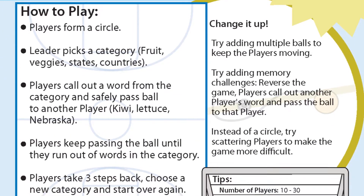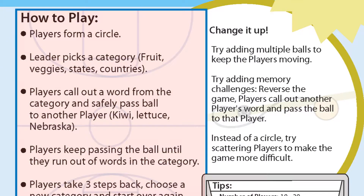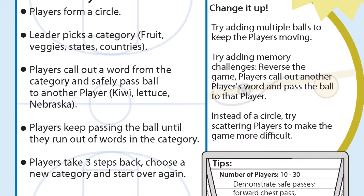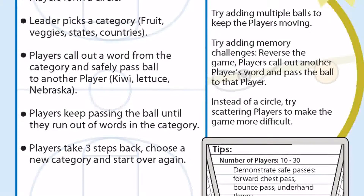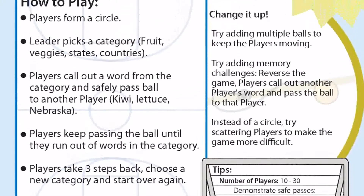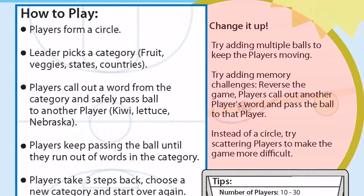The how-to-play section generally starts with how to designate boundaries and teams for the activity, and then goes into the directions on how to play. Change it up includes modifications on how to make the activity more or less challenging — this might include trying different locomotor skills or adjusting team sizes.